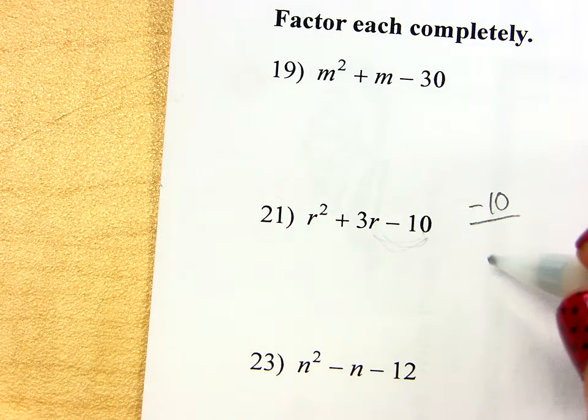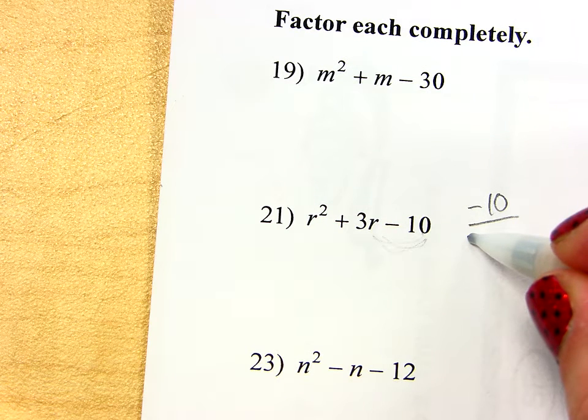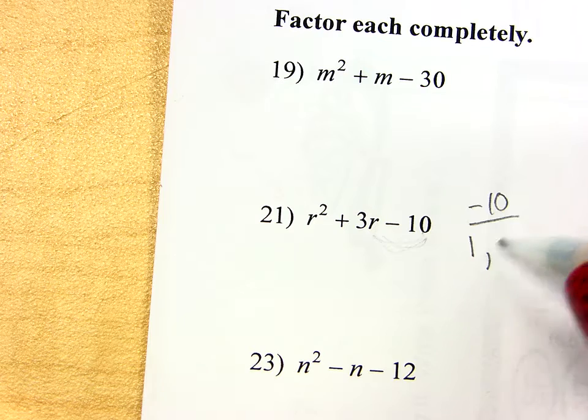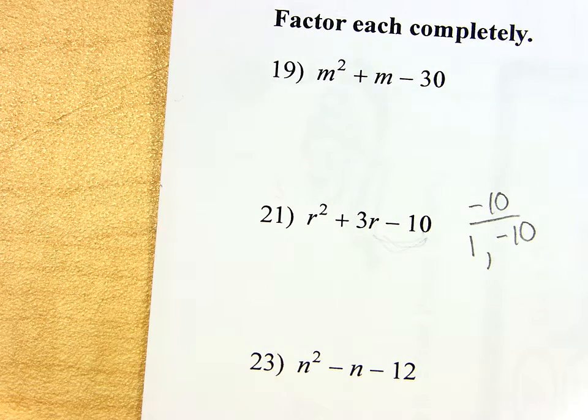Sarah? Oh, wait. Never mind. Oh, wait, no. I'm sorry. That's okay. Let me give you one example. One times negative 10 gets me negative 10, right? Do those add up to be a positive 3? No, so it's not the right pair.